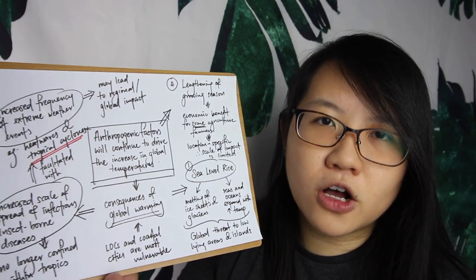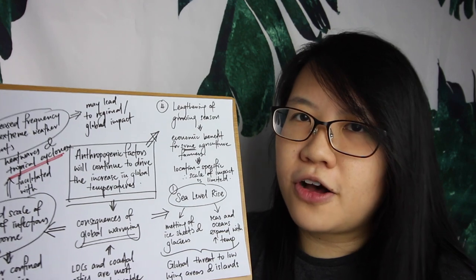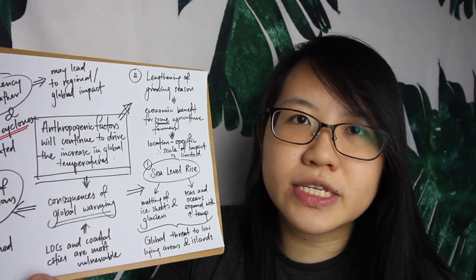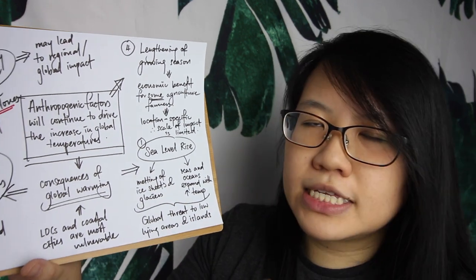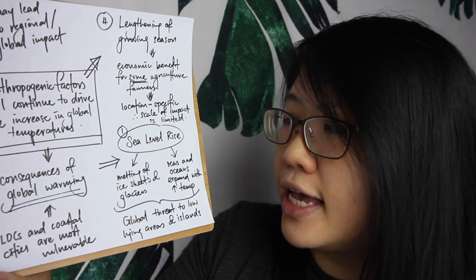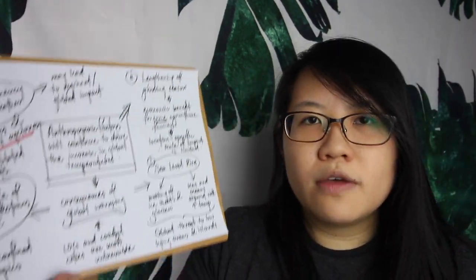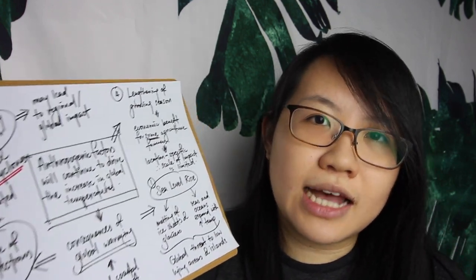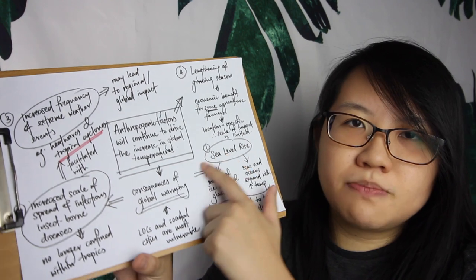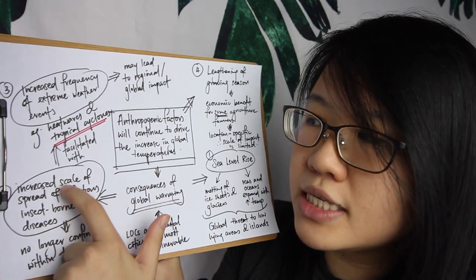Next, we look at how anthropogenic factors lead to various consequences. Your textbook lists four main consequences — three negative and one positive. Sea level rise is the most important consequence because it has global impact. It is caused by two things: the melting of ice sheets and glaciers, and the thermal expansion of seas and oceans with increased global temperatures. This poses a threat to all low-lying countries, cities, and islands. Use statistics to support your answers — for example, around 600 million people live in coastal areas.